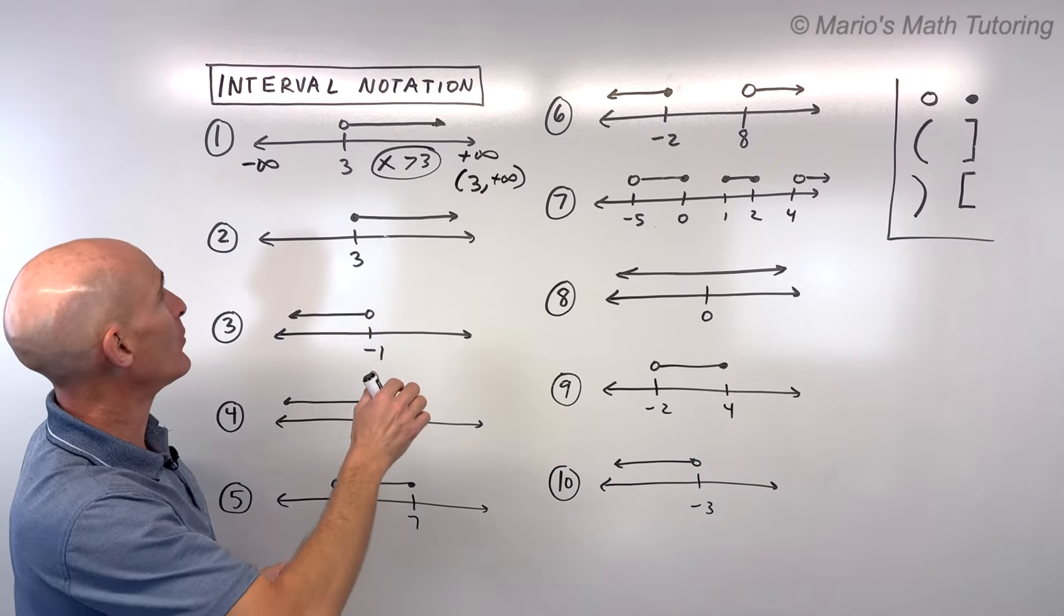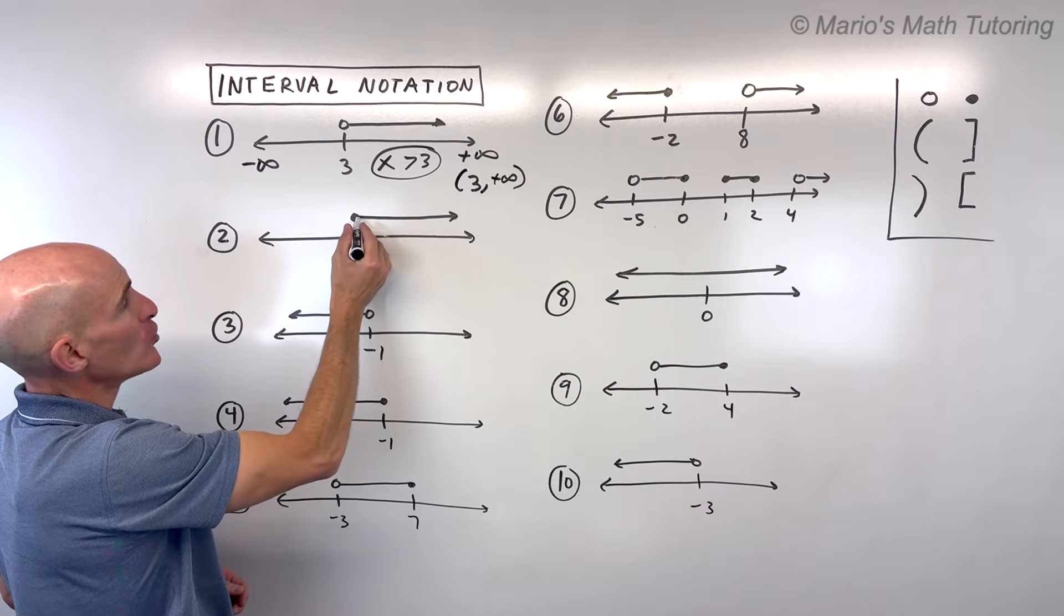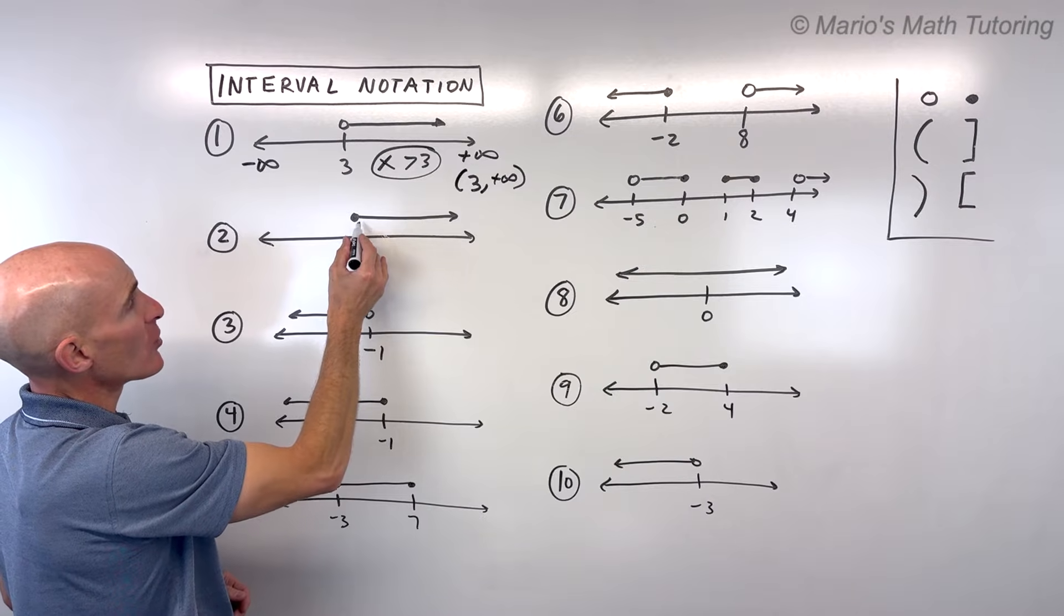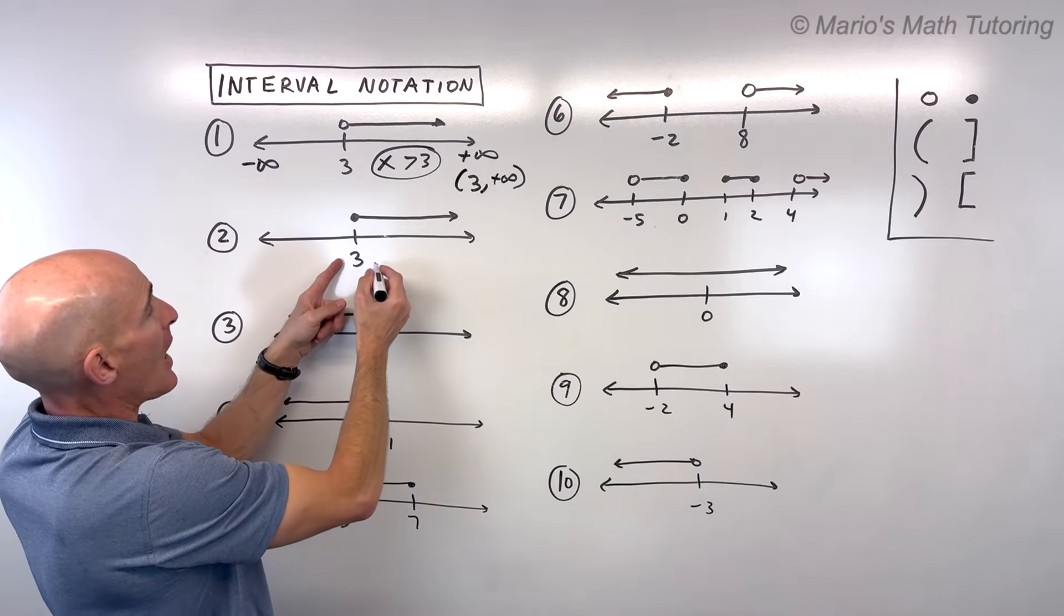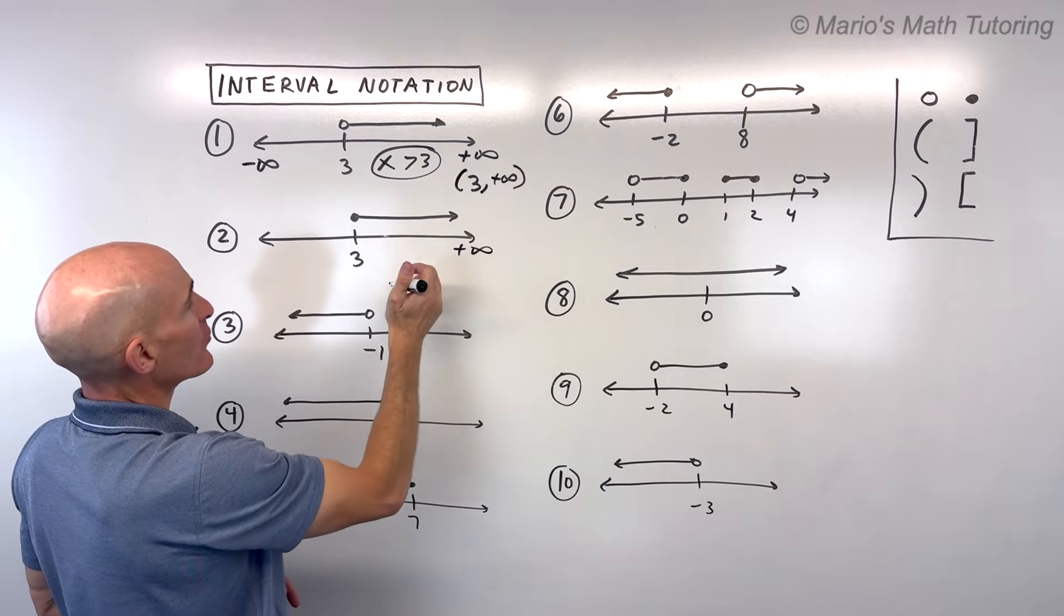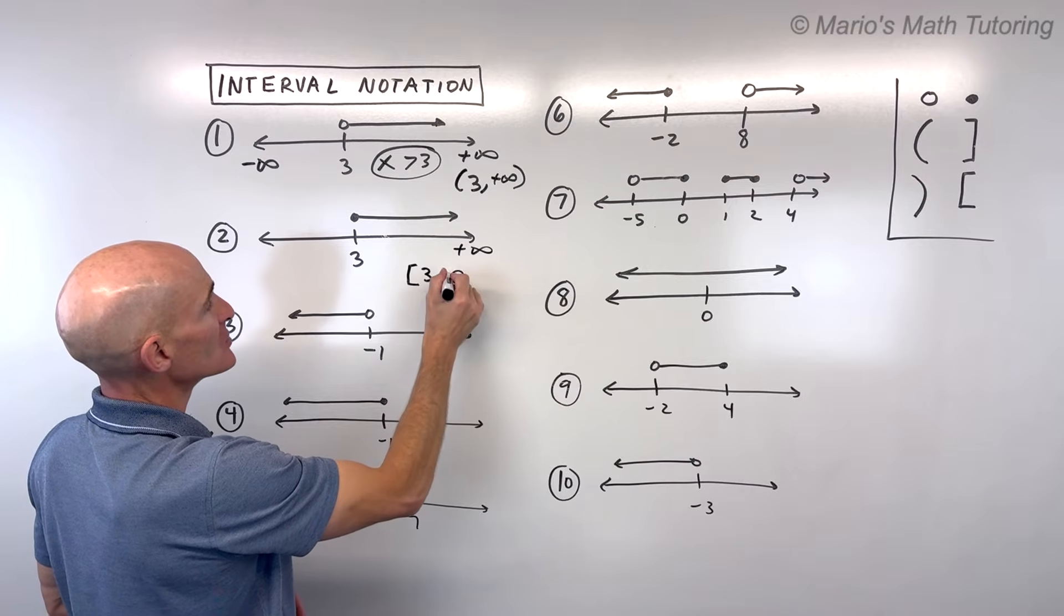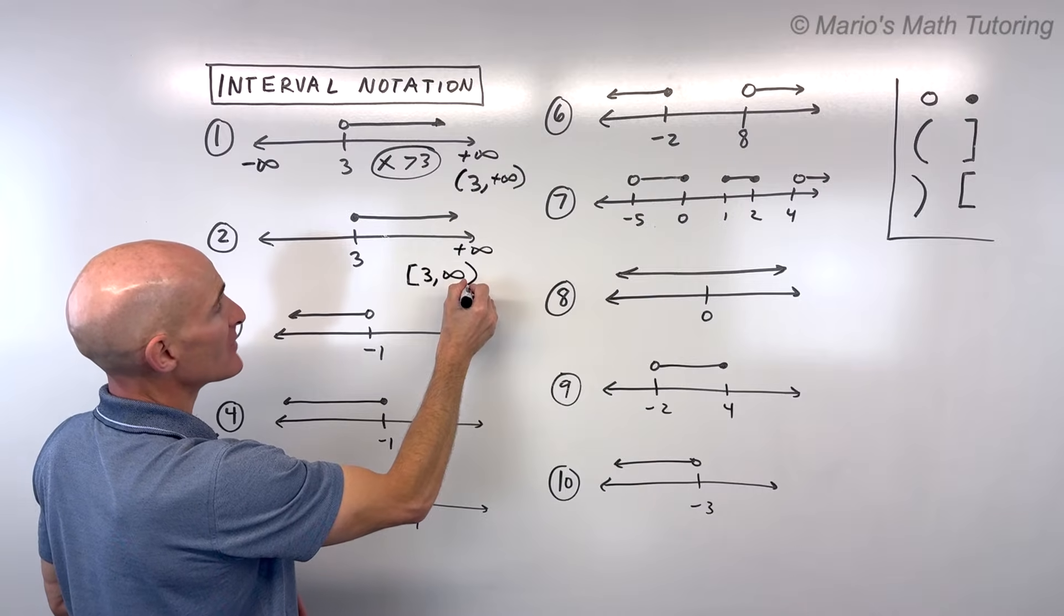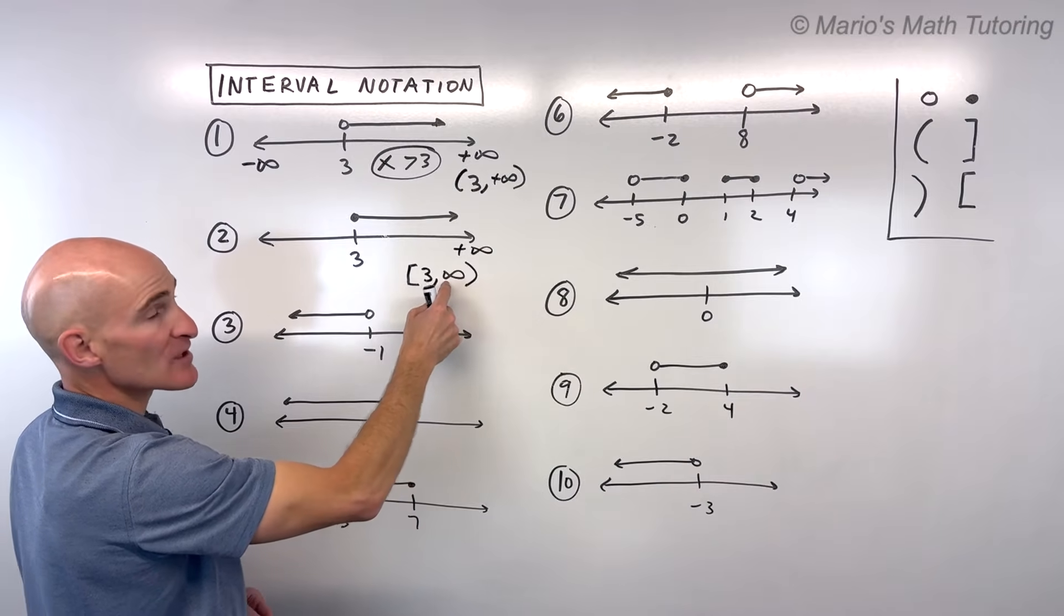Let's look at another example. Number 2. We have almost the same as this one, but notice it's a closed circle, so it includes 3. Normally we would say this is x is greater than or equal to 3. But now we're saying, way over here is positive infinity. I want to work from left to right. It includes 3, so I would say bracket 3 to infinity, parenthesis. We can't reach infinity. You can put the plus infinity or just infinity. That means the same thing. Usually we just write a minus if it's a negative infinity. Otherwise, we just leave it as infinity. That's understood to be positive infinity.